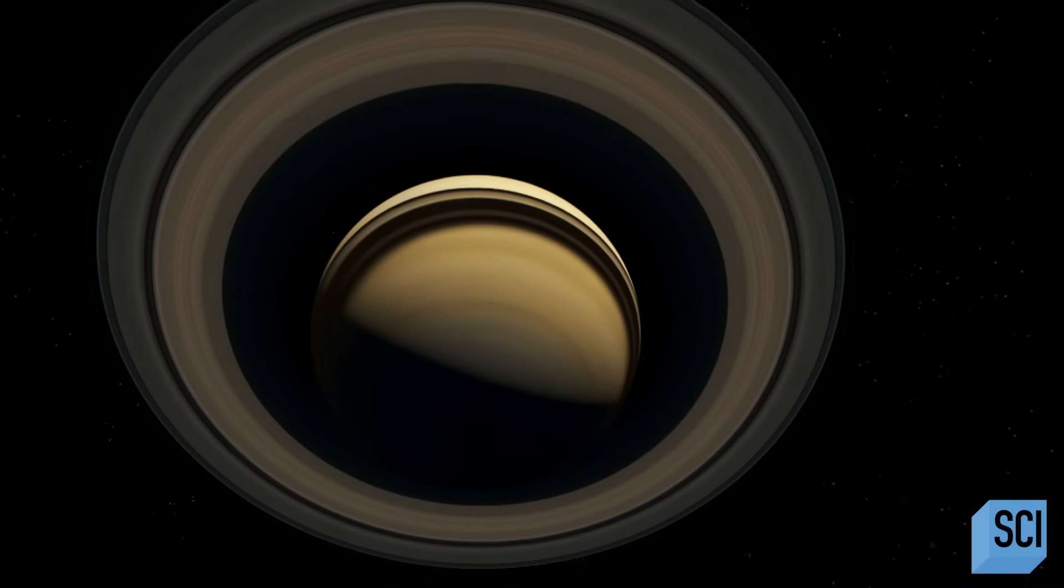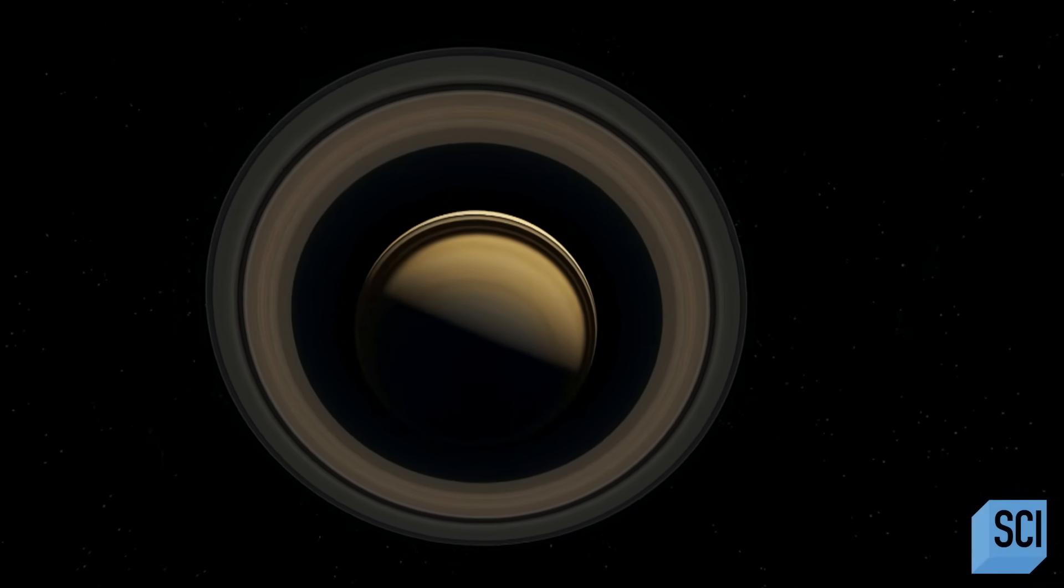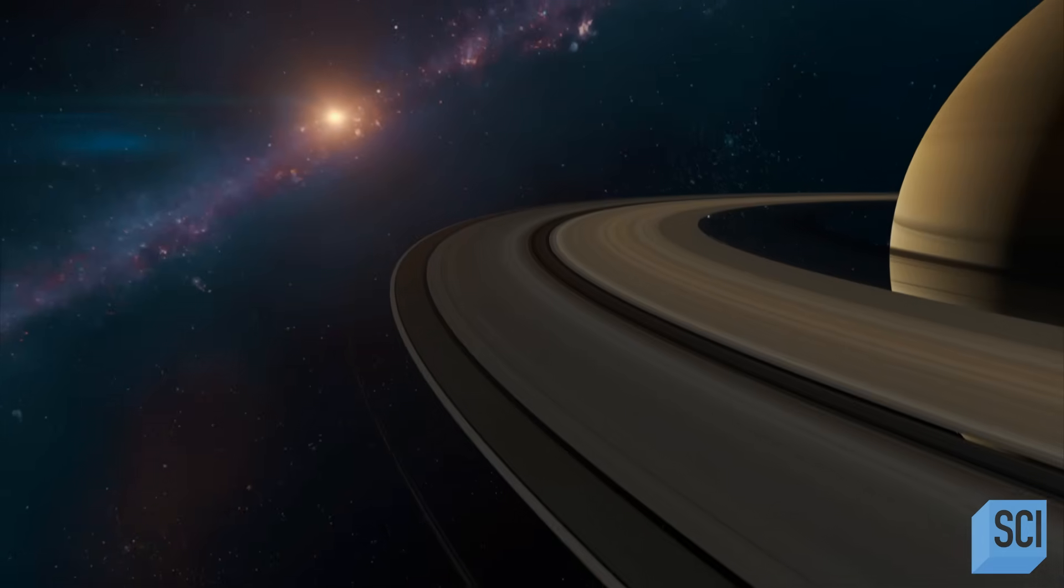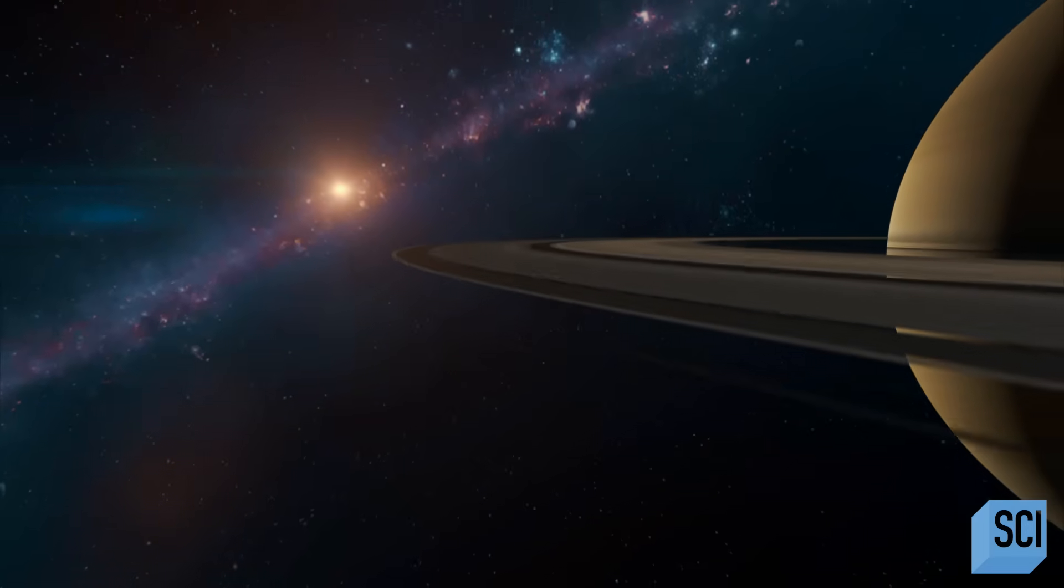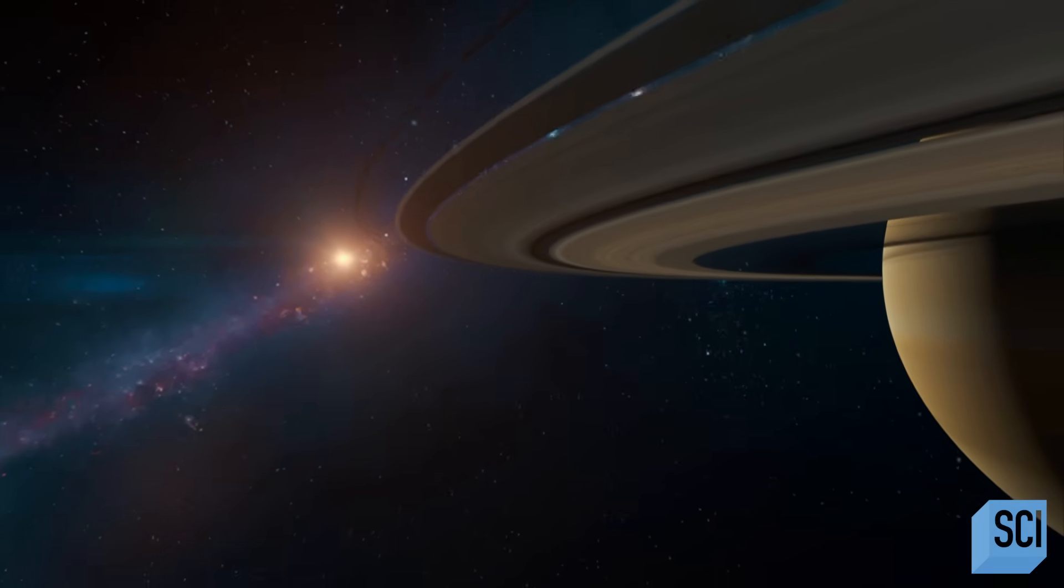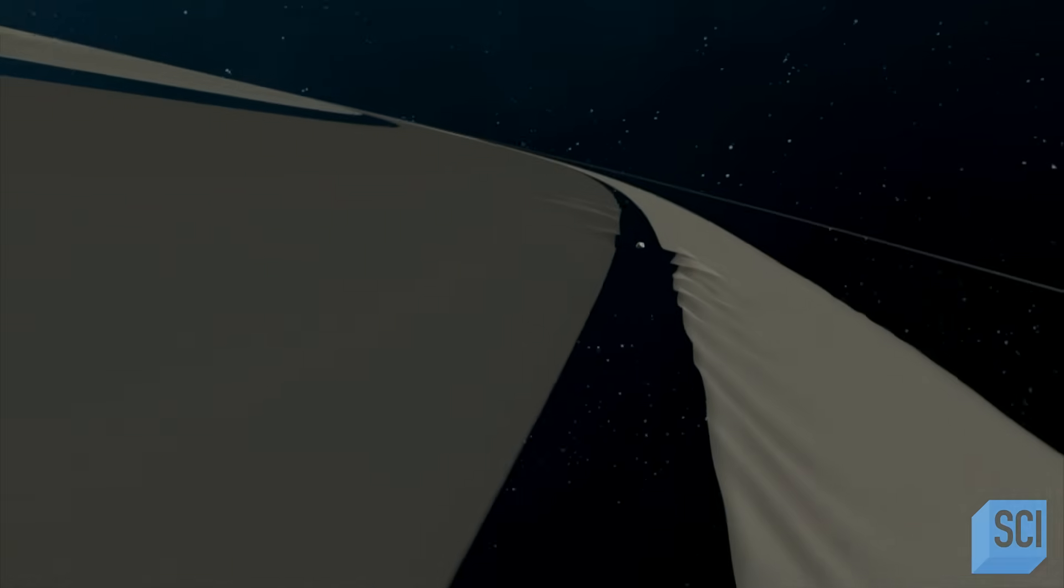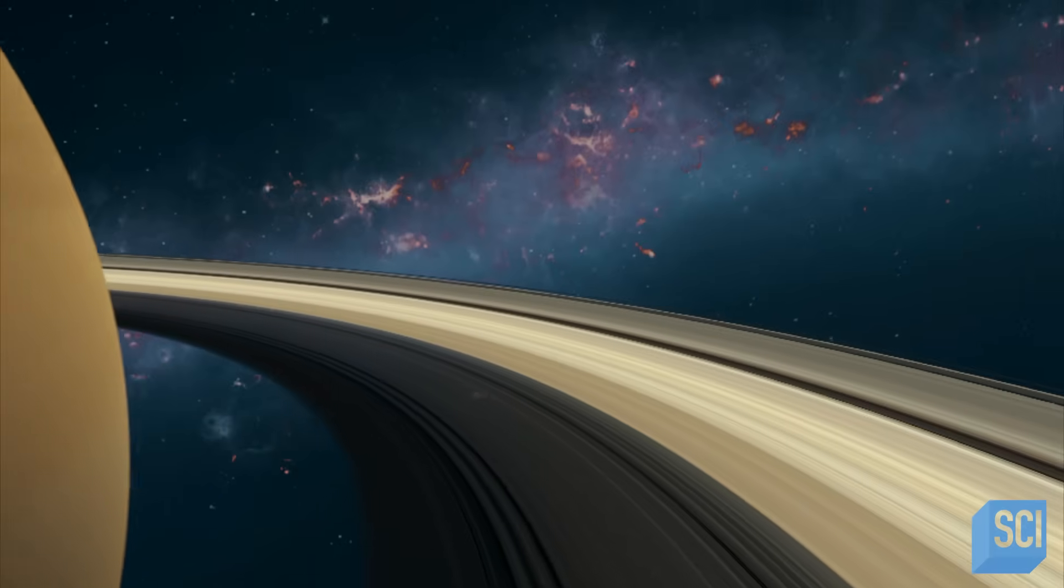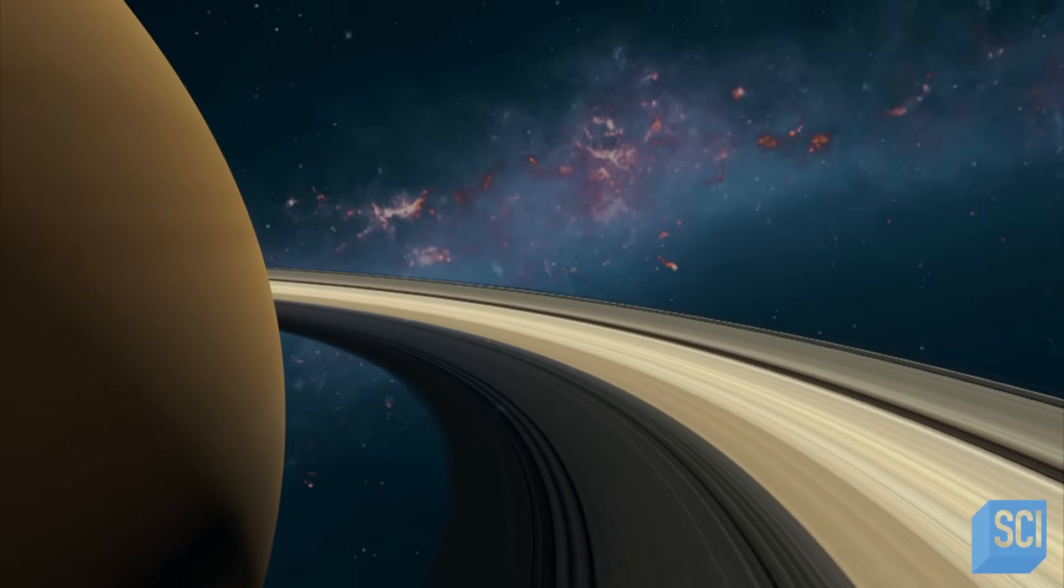If the rings formed with Saturn four and a half billion years ago, they should be much darker. The inescapable conclusion is that the rings are young. Seriously young. From our data, the rings are a hundred or a few hundred millions of years. It's well possible that the dinosaurs could have witnessed the formation of the rings.